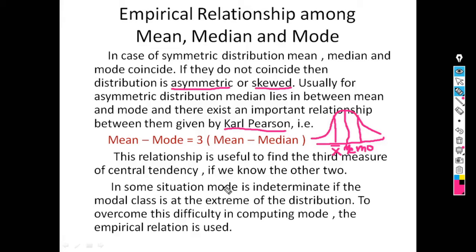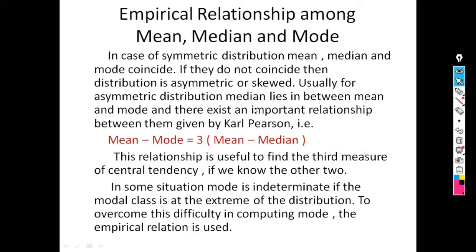This relationship is useful to find the third measure of central tendency if we know the other two. For example, if mean and mode are given and the question asks to calculate median, we can use this empirical relation. Also, if the modal class is at the extreme of the distribution — first or last — mode is indeterminate, so the empirical relationship is used to compute it.